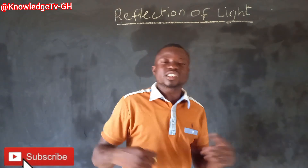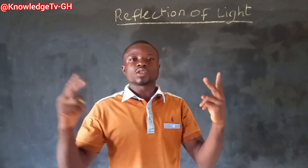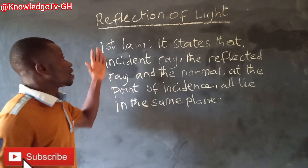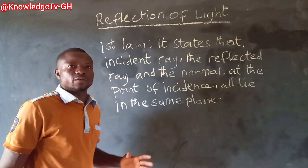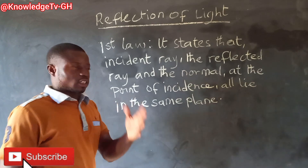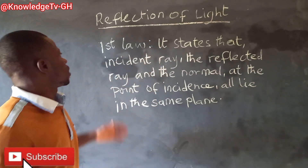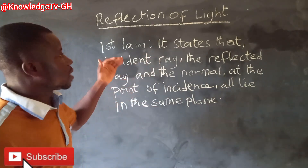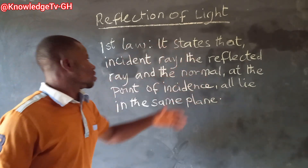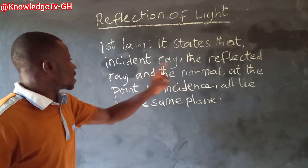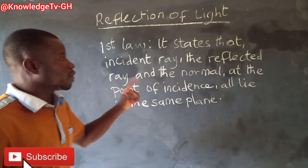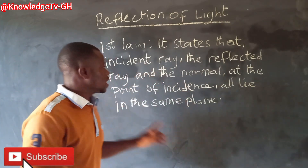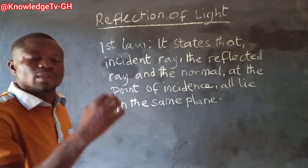So basically you have two laws of reflection. This is the first law of reflection. It says that the incident ray, the reflected ray, and the normal at the point of incidence all lie in the same plane.